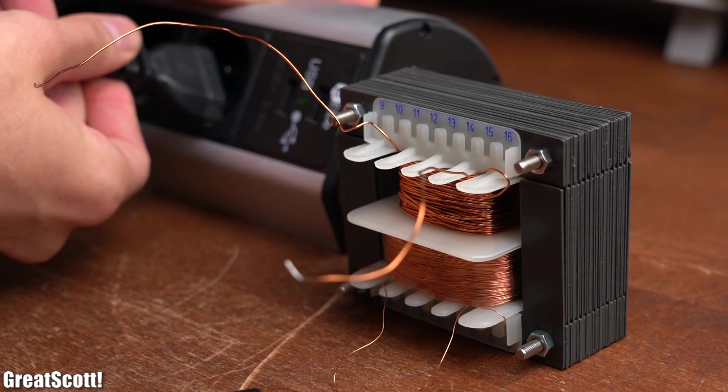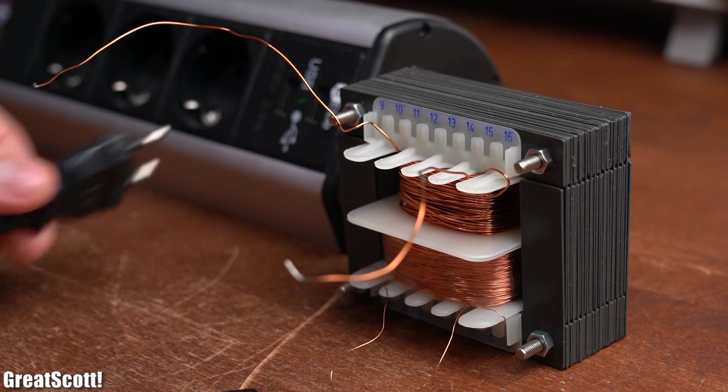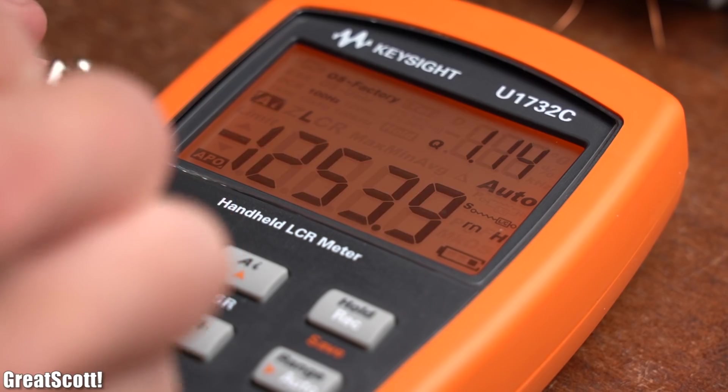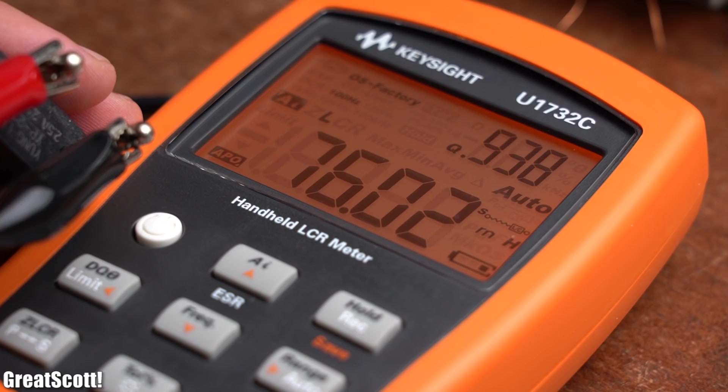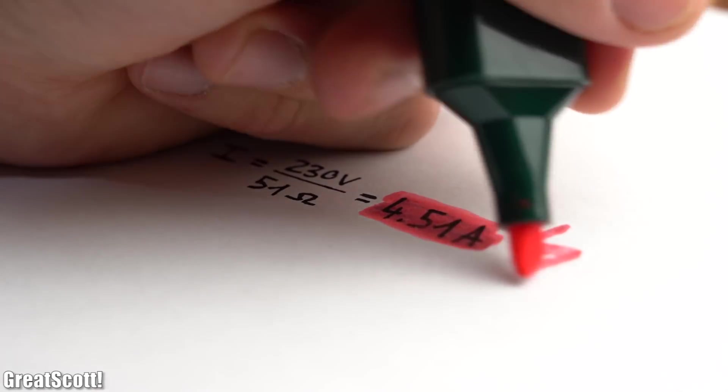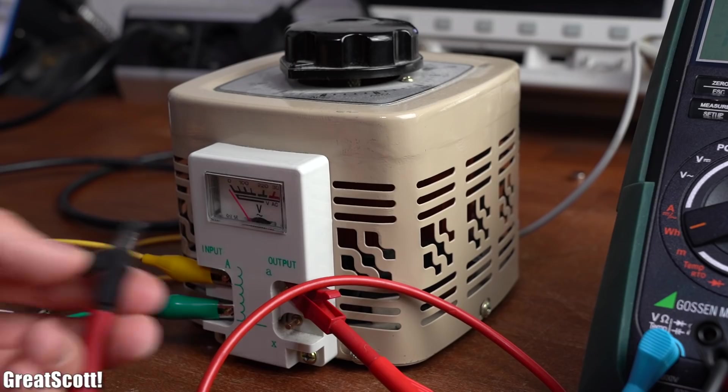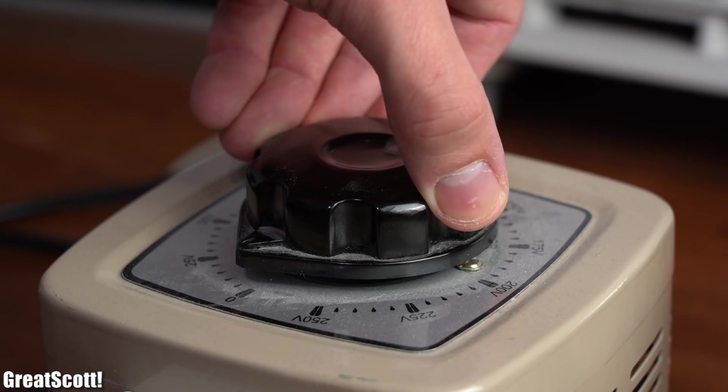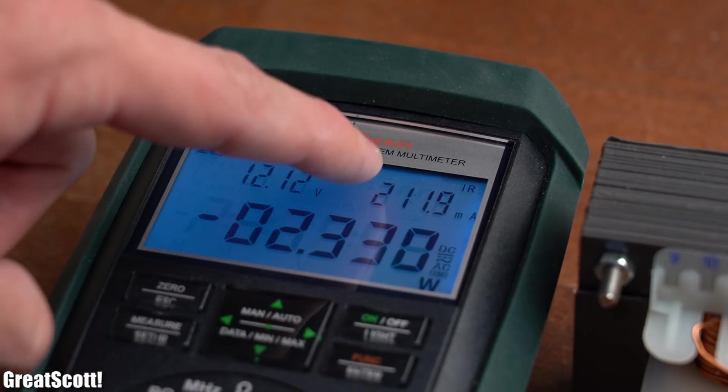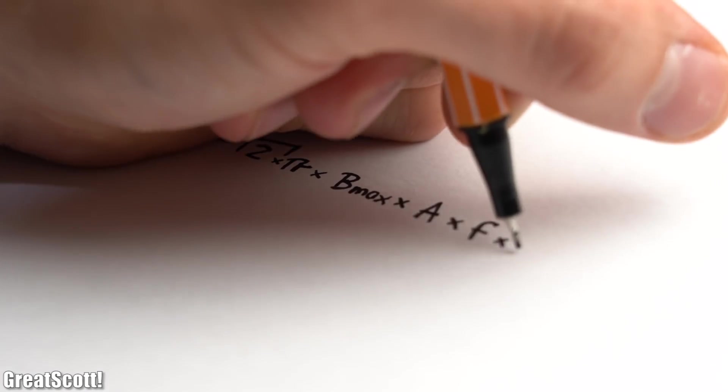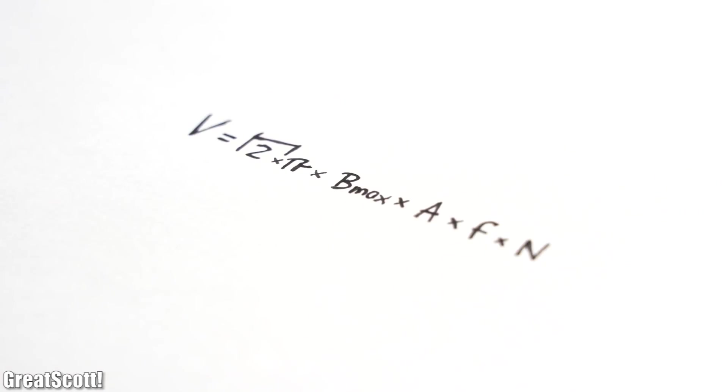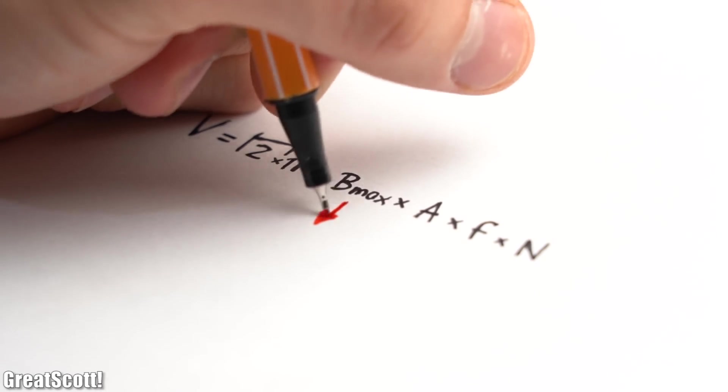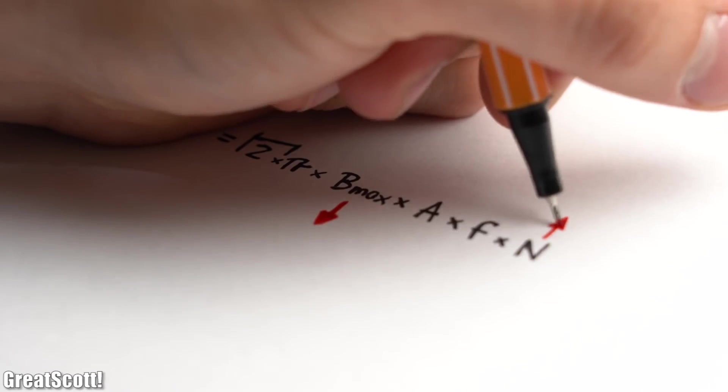Now hooking that up directly to mains voltage might not be a good idea, because with a primary inductance of merely 76 mH we would draw a destructive high current. Instead I hooked it up to my auto transformer which at a mere voltage of 12 volts already delivered a current very close to the max current of the primary side. The reason is that our transformer equation changed, since we now got a way lower magnetic flux density and thus we would require way more windings on the primary side.